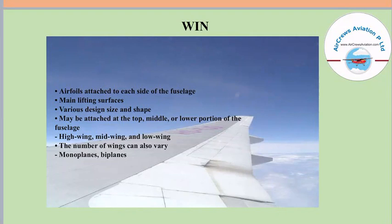The number of wings can also vary. If an aircraft has a single wing, it is known as a monoplane. If it has more than one wing, it is known as a biplane, and so on.